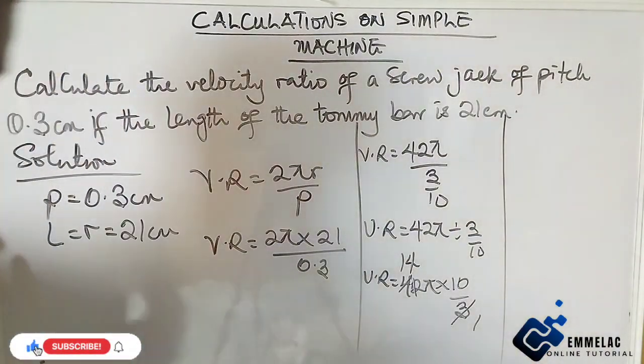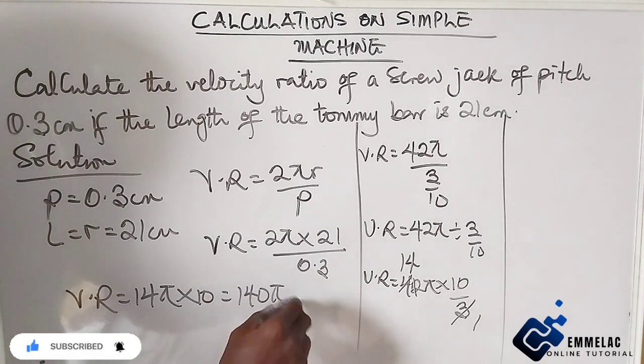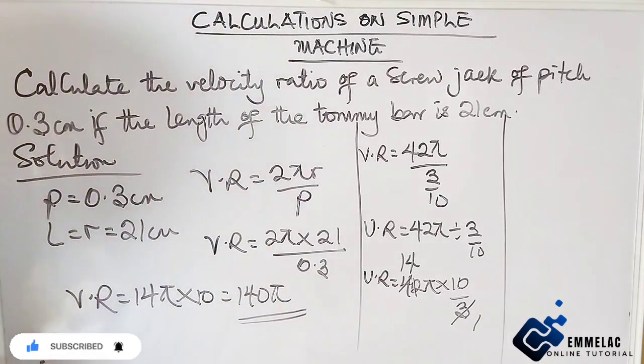ratio. The velocity ratio will now be 14π times 10, which equals 140π. Final answer.